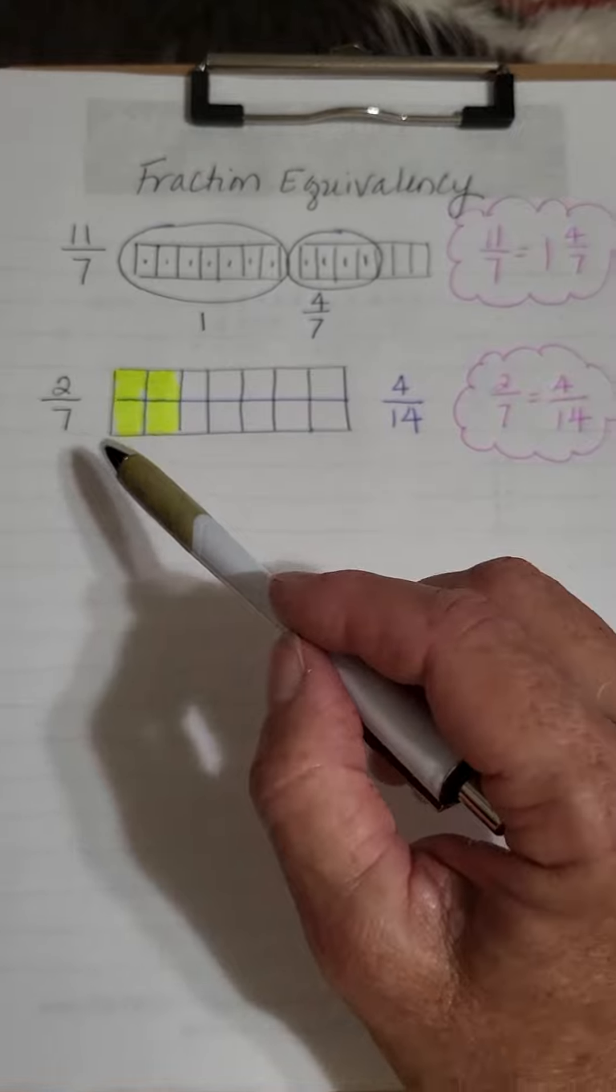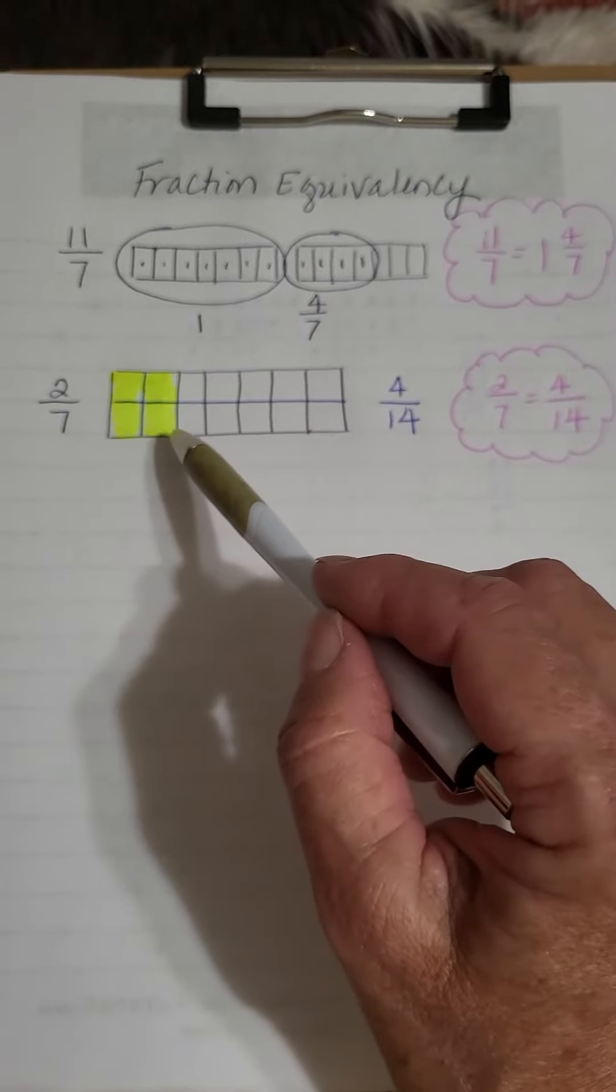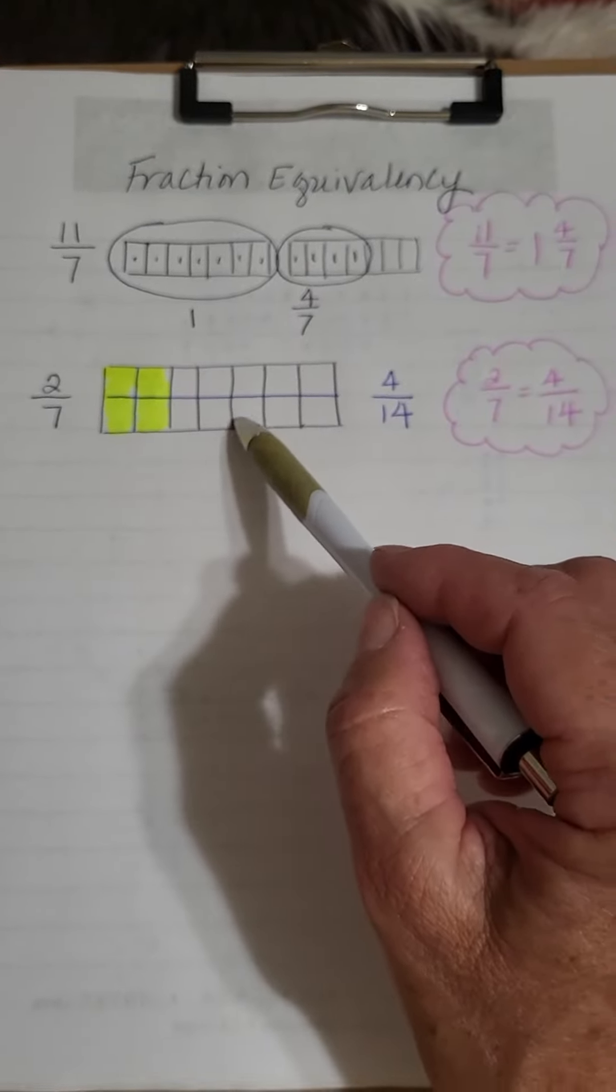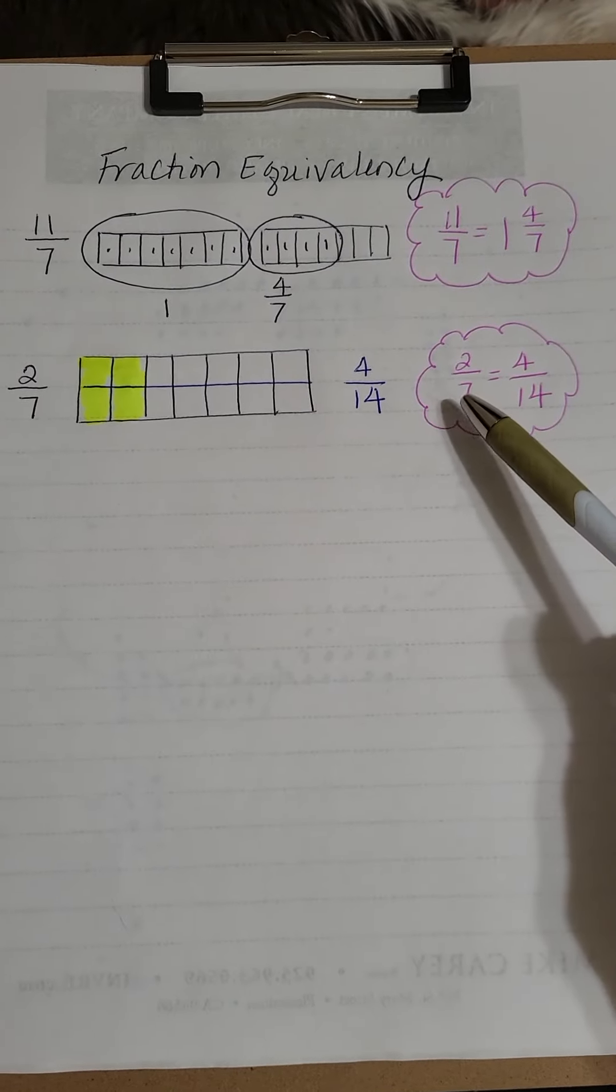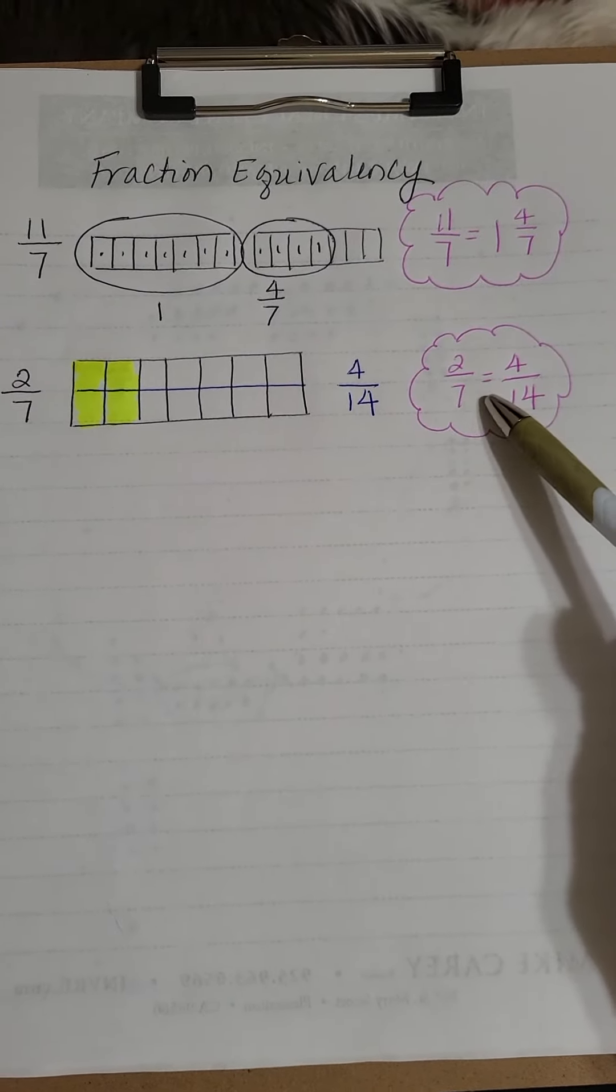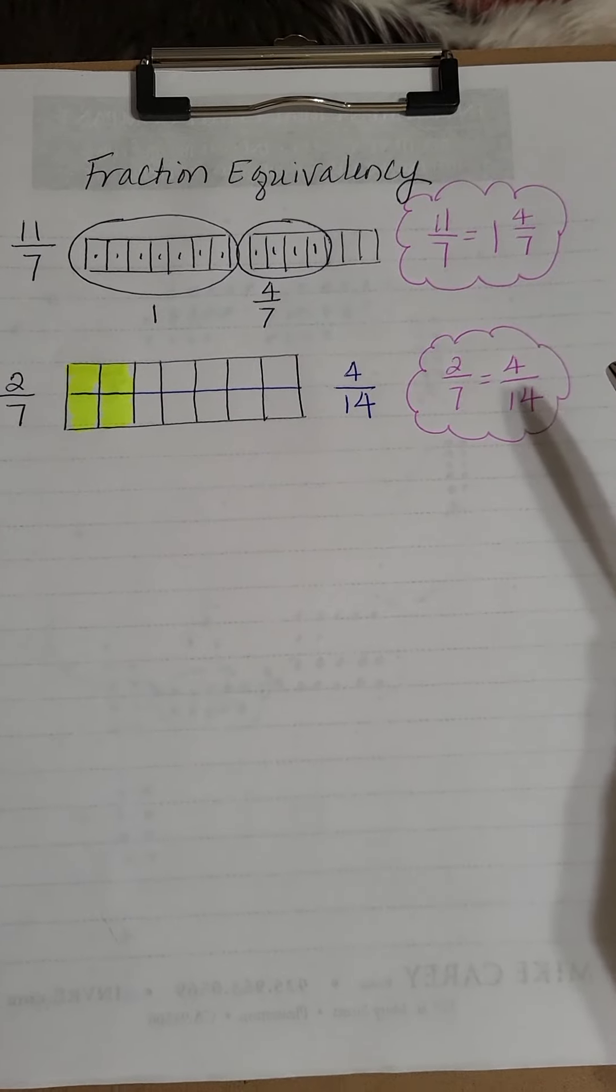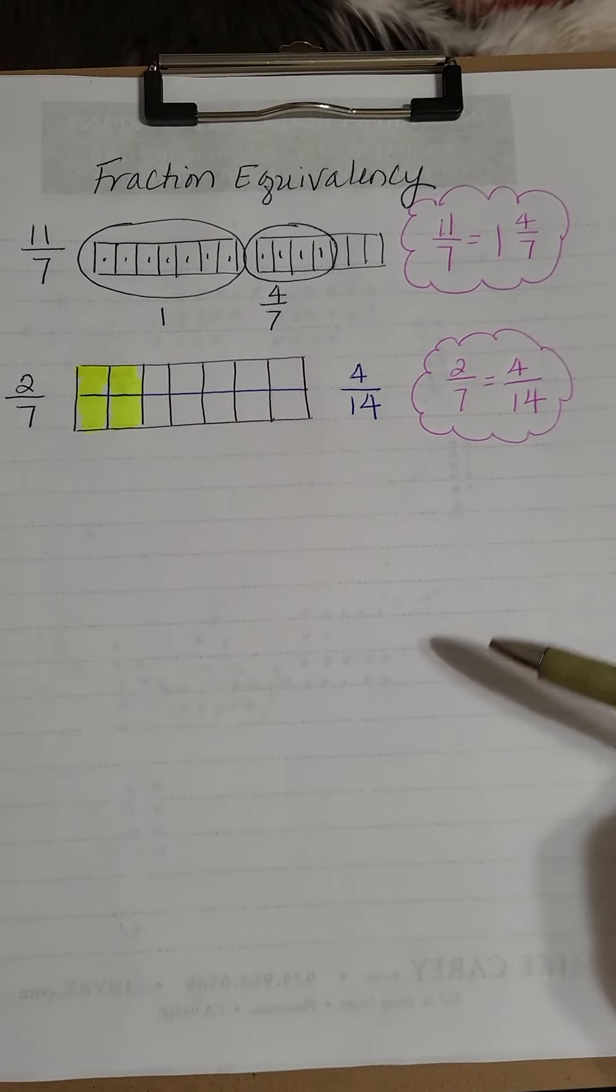1, 2, 3, 4, and then 1, 2, 3, 4, 5, 6, 7, 8, 9, 10, 11, 12, 13, 14. So 2 over 7 is the same as or equivalent to 4 over 14.